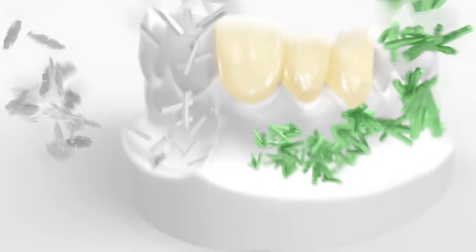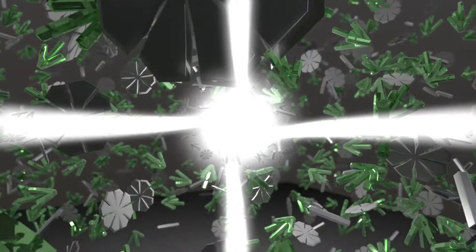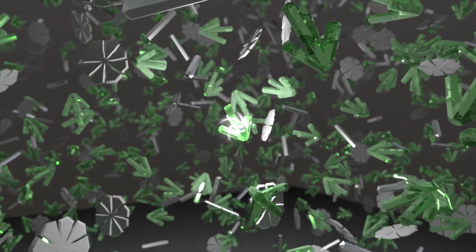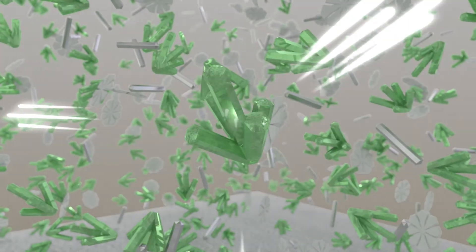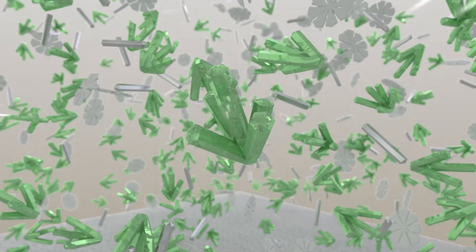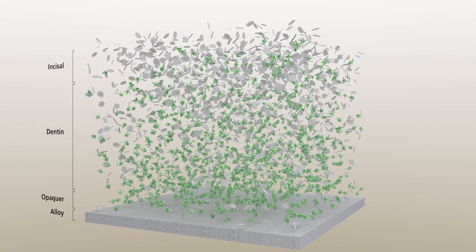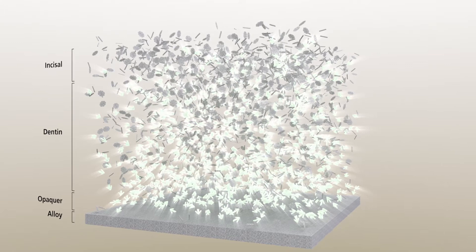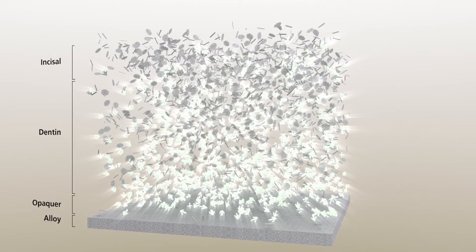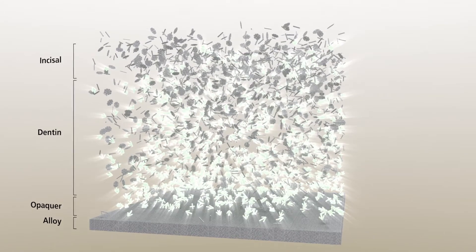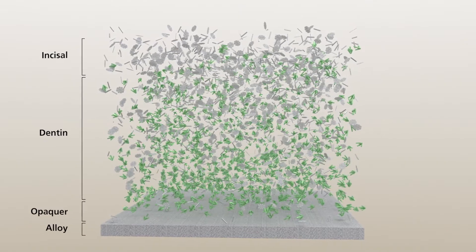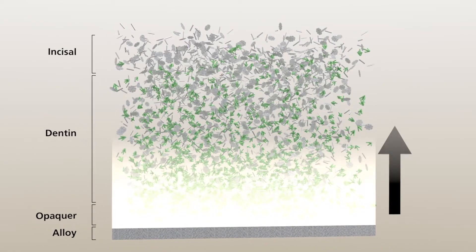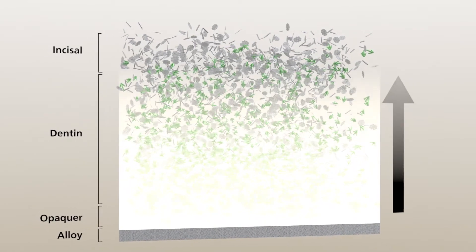And that's how it works. Oxyapatite crystals reflect incident light strongly, imparting the restoration with a depth effect. The content of oxyapatite crystals varies in the individual layering materials and is particularly high in the opaquer material. With increasing distance from the alloy, the translucency increases.